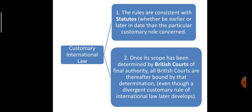After this condition is fulfilled, the next condition will by default be applicable, that is applicable to the courts. Once the scope of international law or rules has been determined by the British courts of final authority — similar to the Supreme Court as the apex court in India — all British courts are thereafter bound by that determination, even though a divergent customary rule of international law later develops, because it has already been accepted in the statutes of Great Britain.